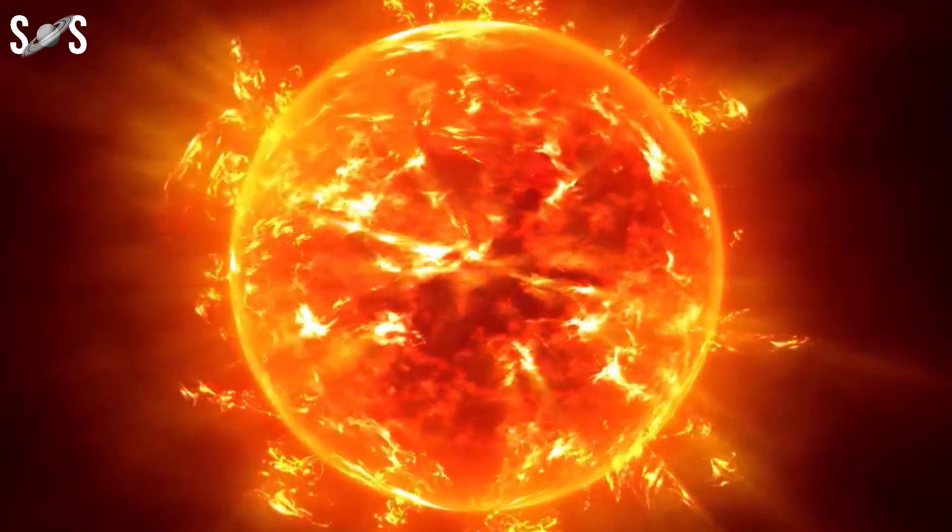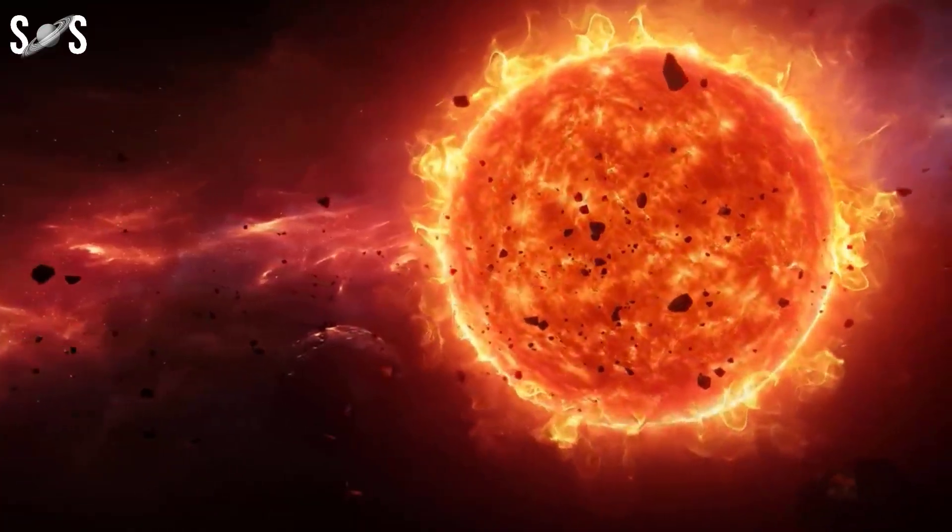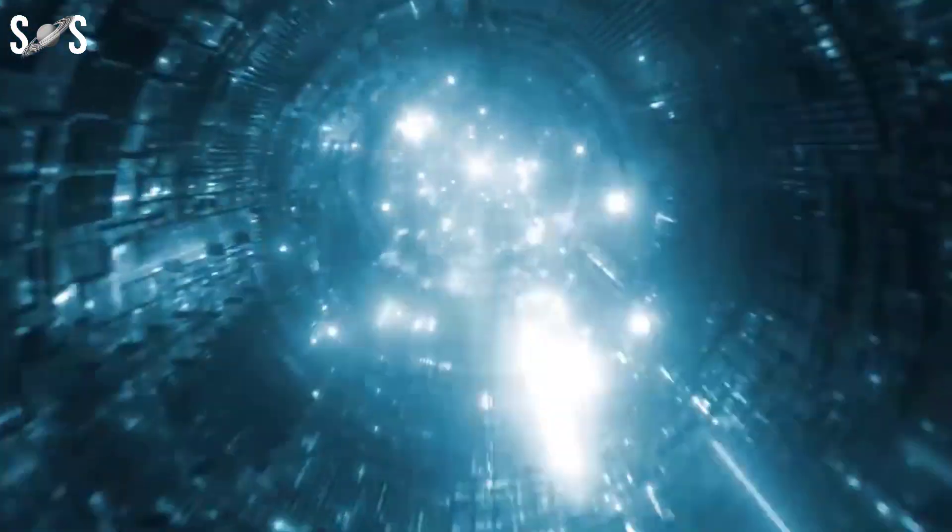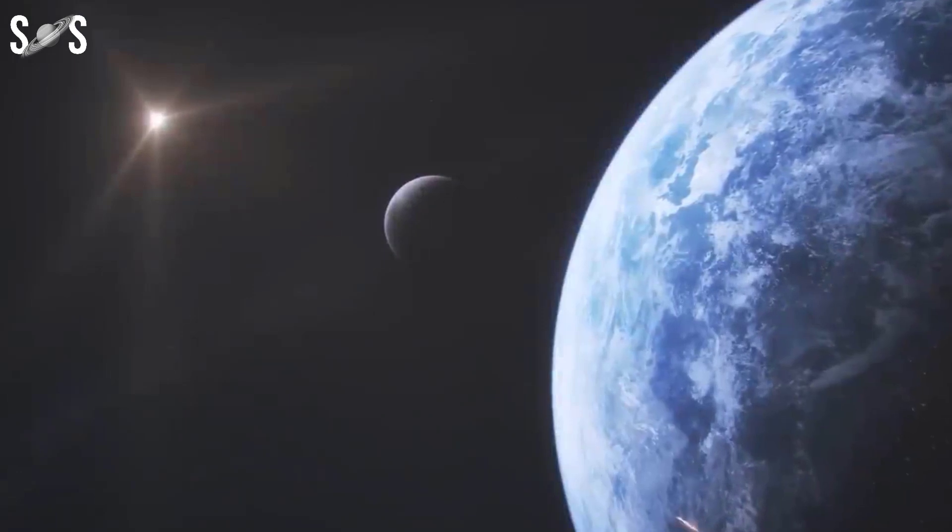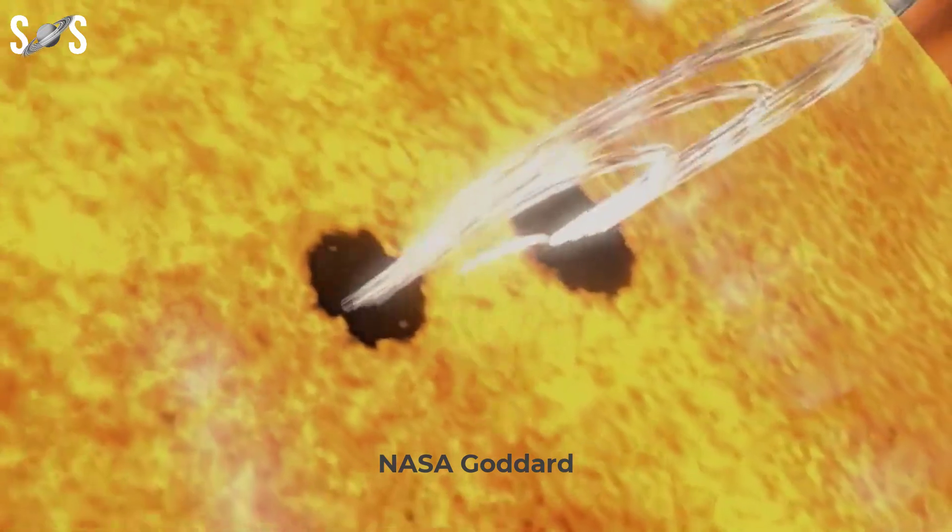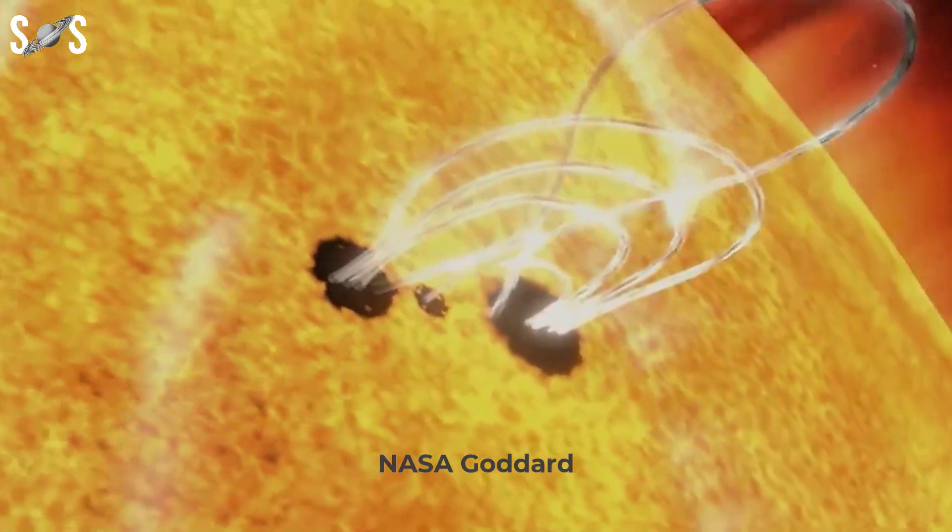There are generally two types of coronal mass ejections (CMEs): gradual CME and impulsive CME. Gradual CMEs are slower and have a longer duration, while impulsive CMEs are faster and have a shorter duration. These CMEs are both powerful eruptions of plasma and magnetic fields from the Sun's corona.